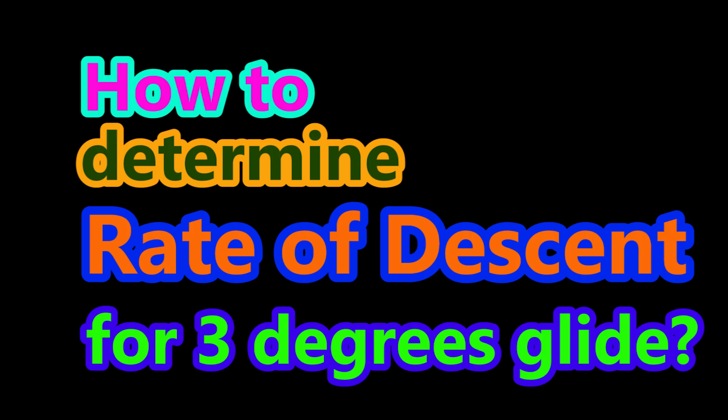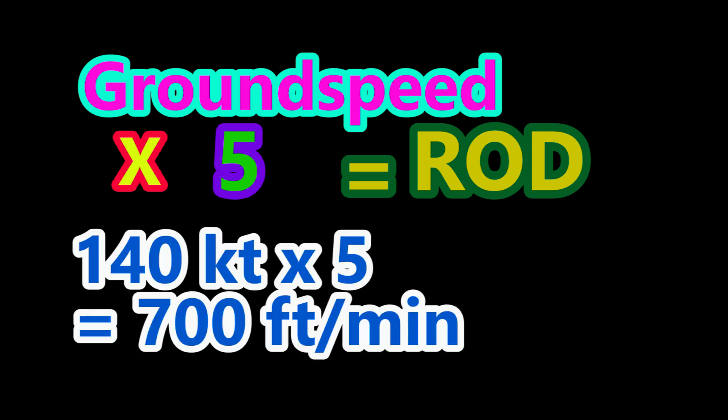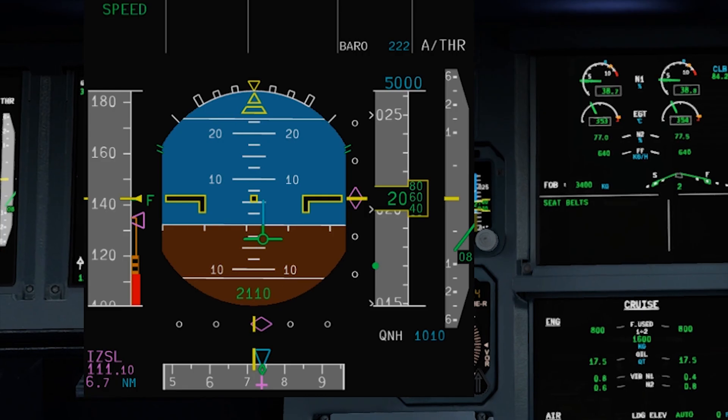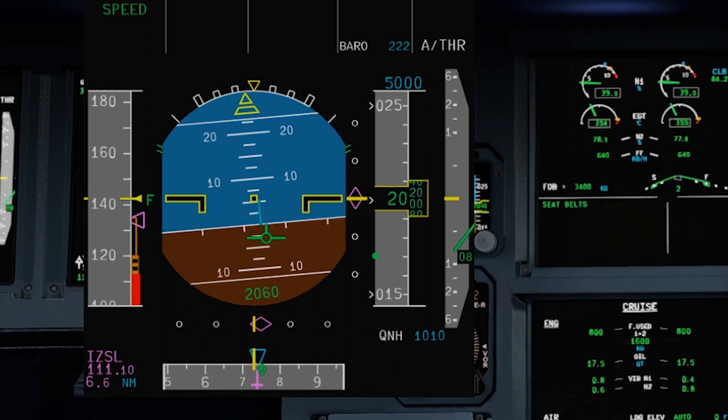The formula for a 3-degree glide slope is your ground speed multiplied by 5 to get your rate of descent. So if your ground speed is 140 knots, multiply by 5 and you get 700 feet per minute rate of descent. That is why most of the time on approach to land at a 3-degree glide slope, you will see your rate of descent approximately 700 feet per minute. So the question is: what is your rate of descent if you want to fly a 6-degree glide down?